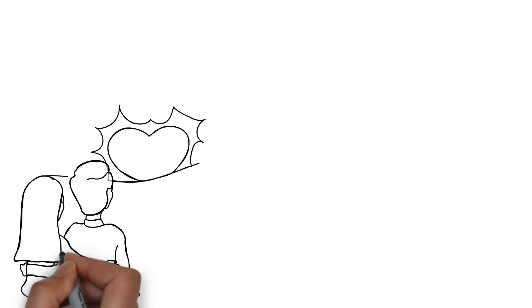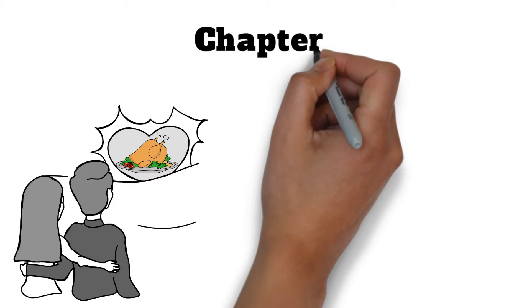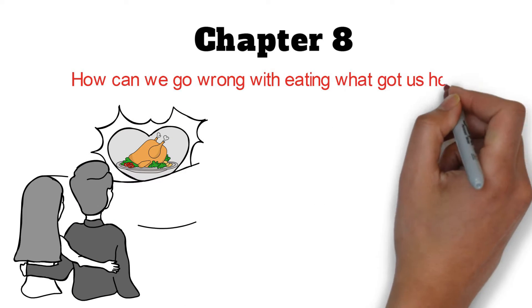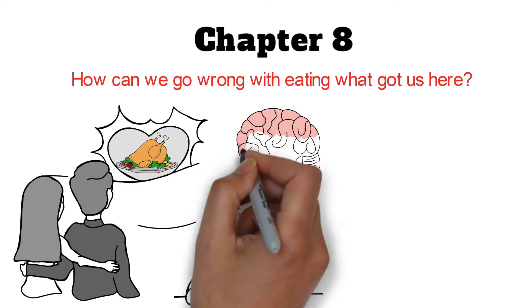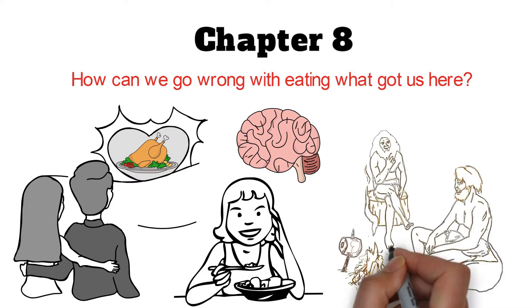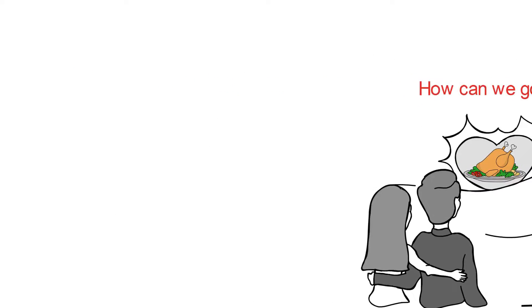Mankind's love of meat actually dates back to the very beginning of time. As I explain in Chapter 8, how can we go wrong with eating what's got us here? Eating the right kinds of fat and protein, our brains needed to grow and expand, eating what science says made us into Homo sapiens, meaning literally wise man.